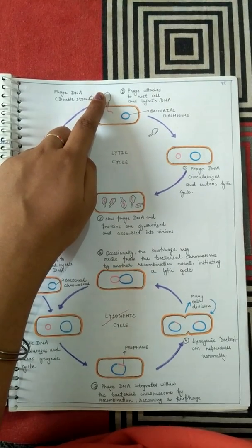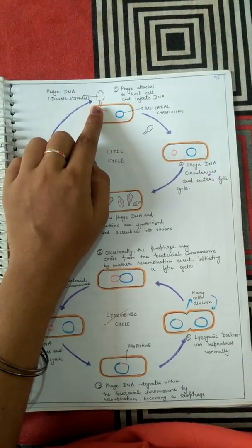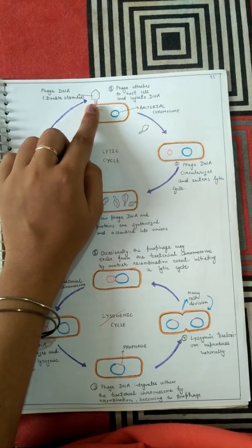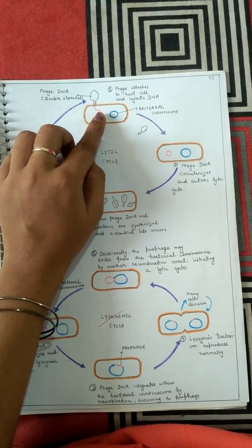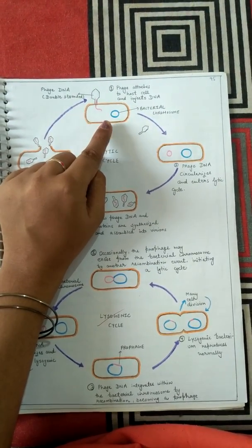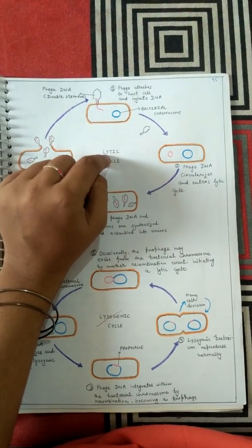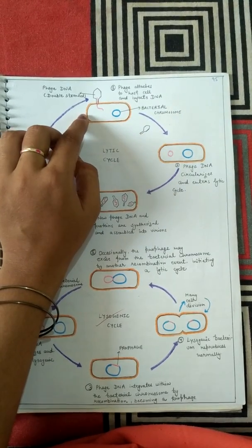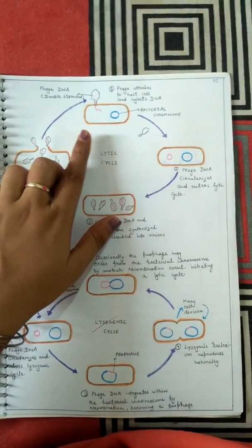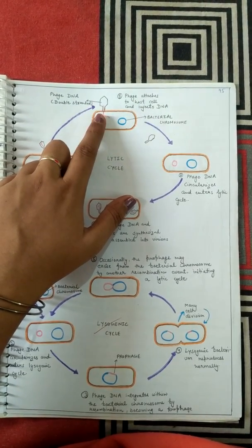The first step of the lytic cycle is attachment, where the bacteriophage attaches to the surface of the bacterial cell. On the bacterial cell there are many specific receptors, and the bacteriophage attaches to those receptors. After attaching, the bacteriophage injects its own nucleic acid — its DNA — inside the bacterial cell. The pink color in the diagram represents the bacteriophage DNA being injected.